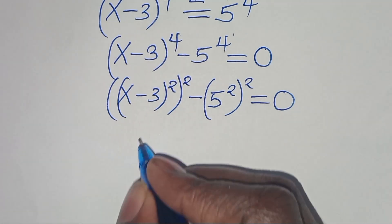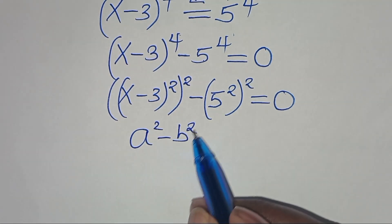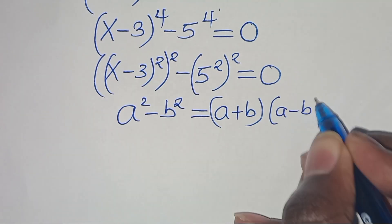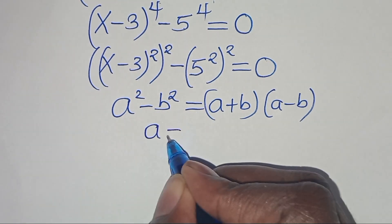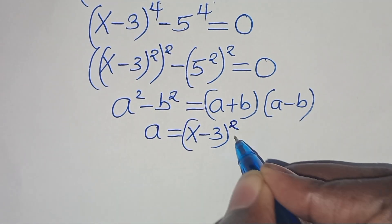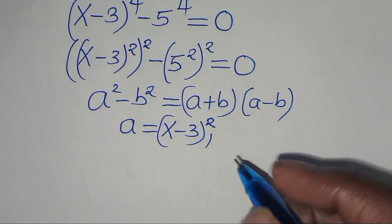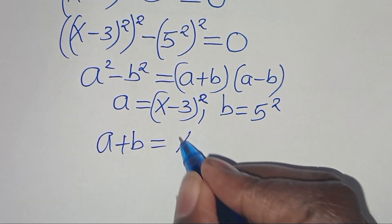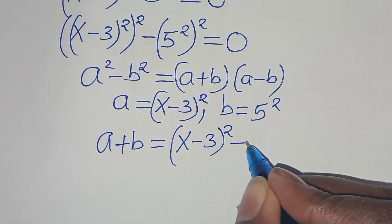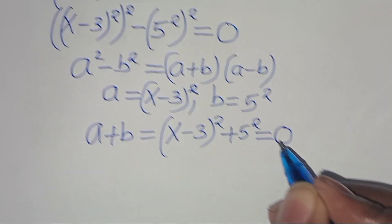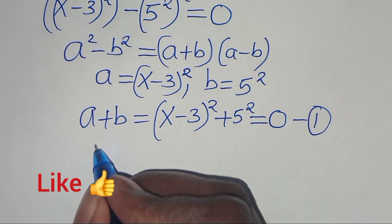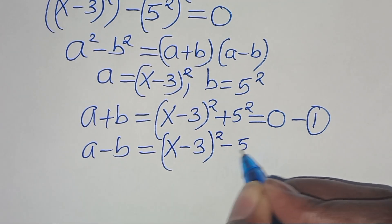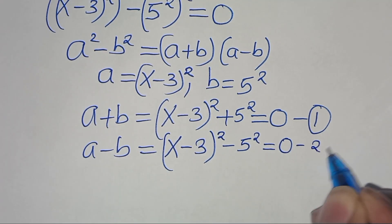This equation is in the form of a squared minus b squared, which is the difference of two perfect squares, which we can express as a plus b times a minus b. From this equation, a is equal to x minus 3 raised to the power of 2, and b is equal to 5 to the power of 2. So a plus b equals x minus 3 to the power of 2 plus 5 to the power of 2, equal to 0 — call this equation 1. And a minus b equals x minus 3 to the power of 2 minus 5 to the power of 2, equal to 0 — call this equation 2.